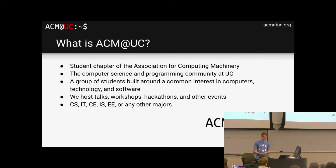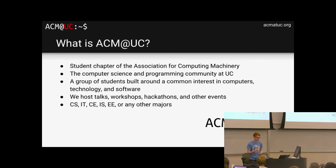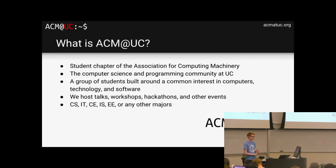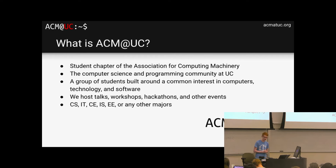So what is ACM at UC? Well, you might have seen from our emails — we are the student chapter of the Association for Computing Machinery. We are the computer science and programming community at UC. We're just a group of students built around the same interest: computers, technology, and software. We host talks, workshops, hackathons, programming contests, etc. You can be any major to join ACM — CS, CE, EE, IT, IS. Doesn't matter. All are welcome.